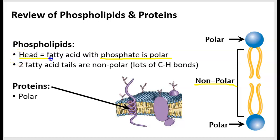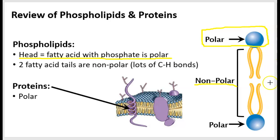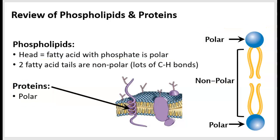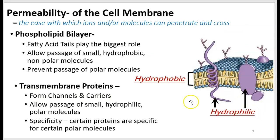The two fatty acid tails are non-polar, because they don't have that phosphate group or the nitrogen. Now, the proteins, because they are made up of amino acids, are polar. A cell's permeability — which means the ease with which an ion or a molecule can penetrate and cross — is dependent on this polarity and non-polarity.